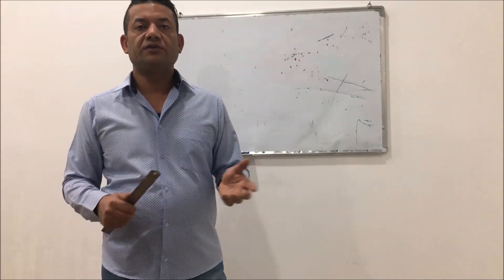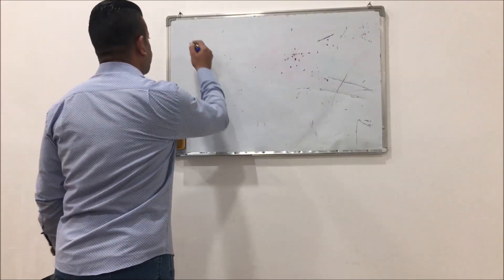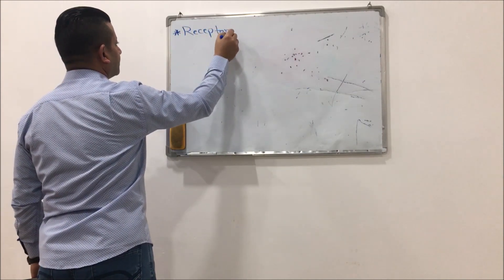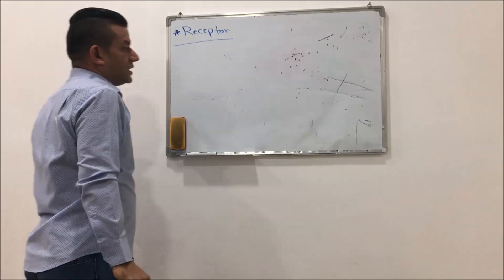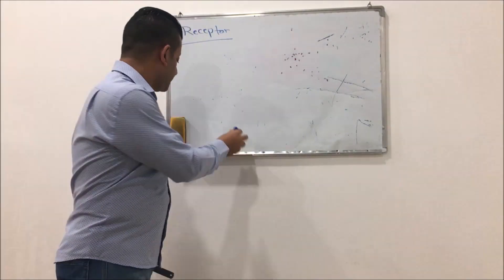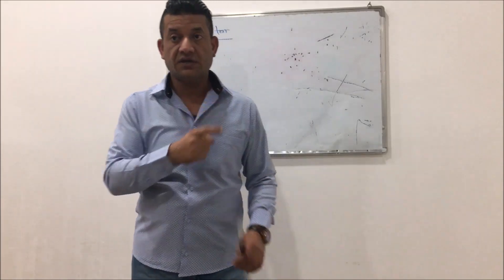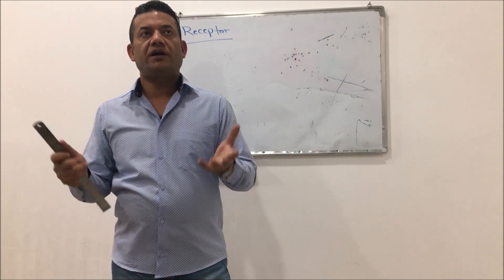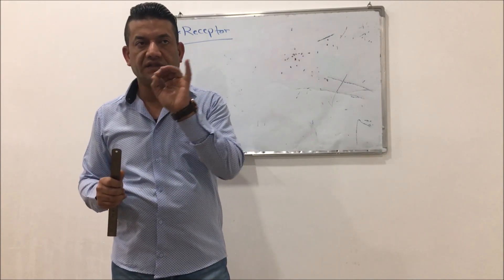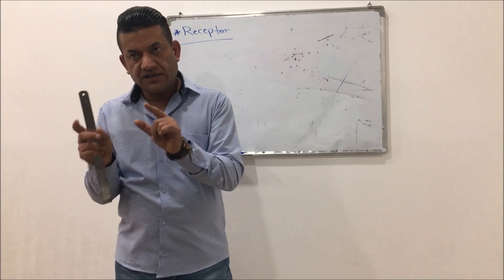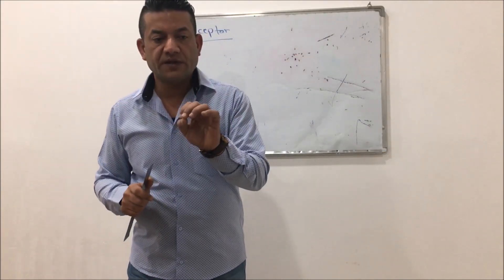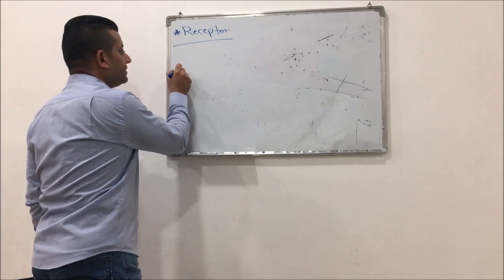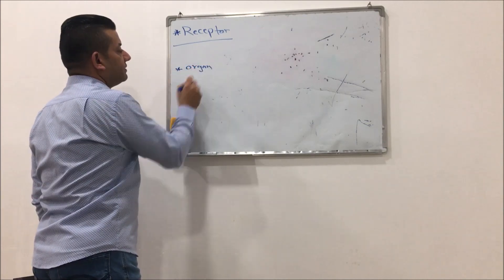In relation to that, we have to speak about the receptor. The nerve receptor — we are speaking now about the nerve receptor, not about the cellular receptors. The nerve receptor is usually a nerve ending that responds to a specific stimulus. Sometimes the receptor is not a nerve ending but a specific organ.